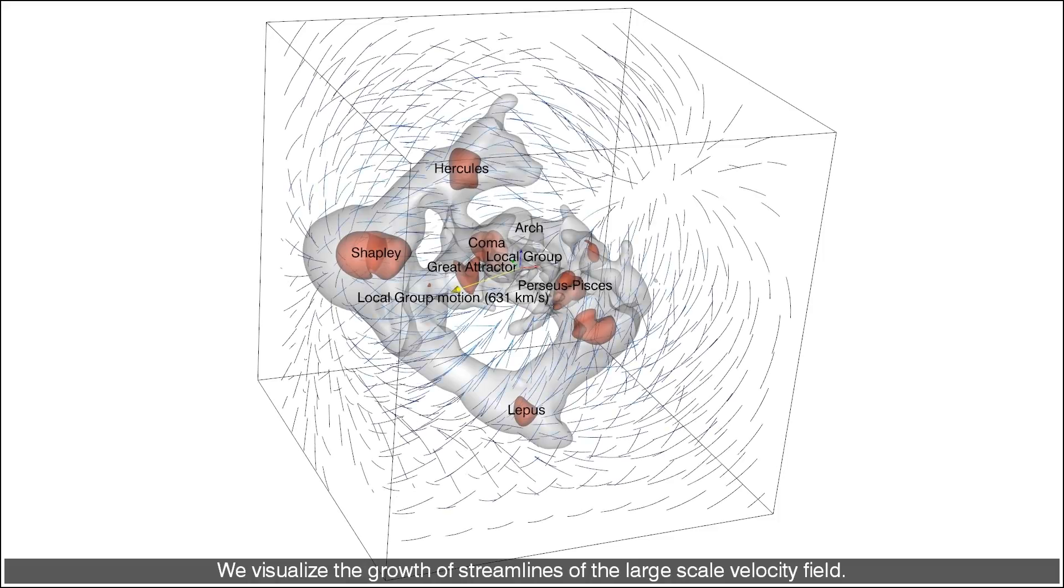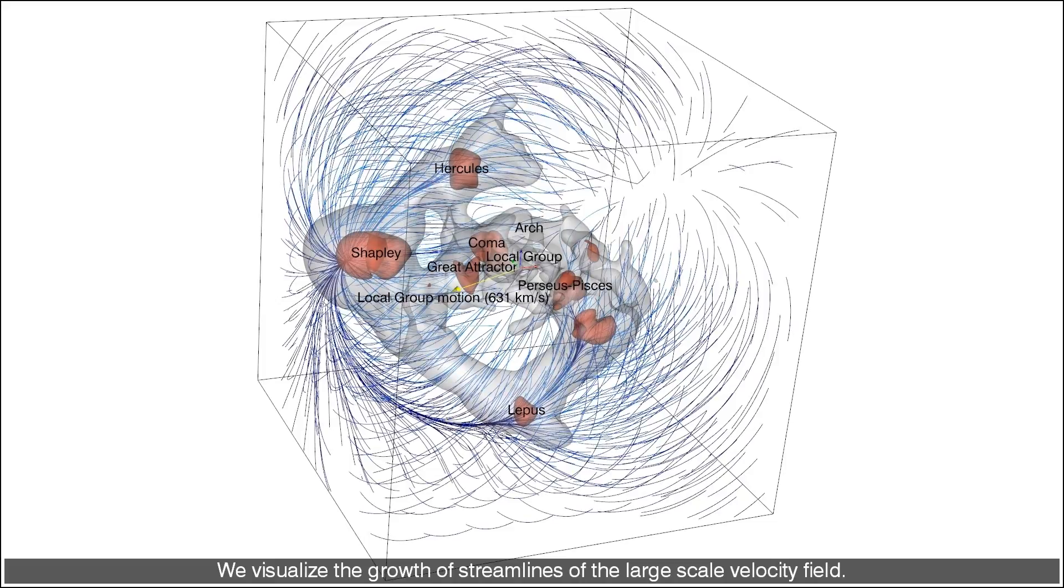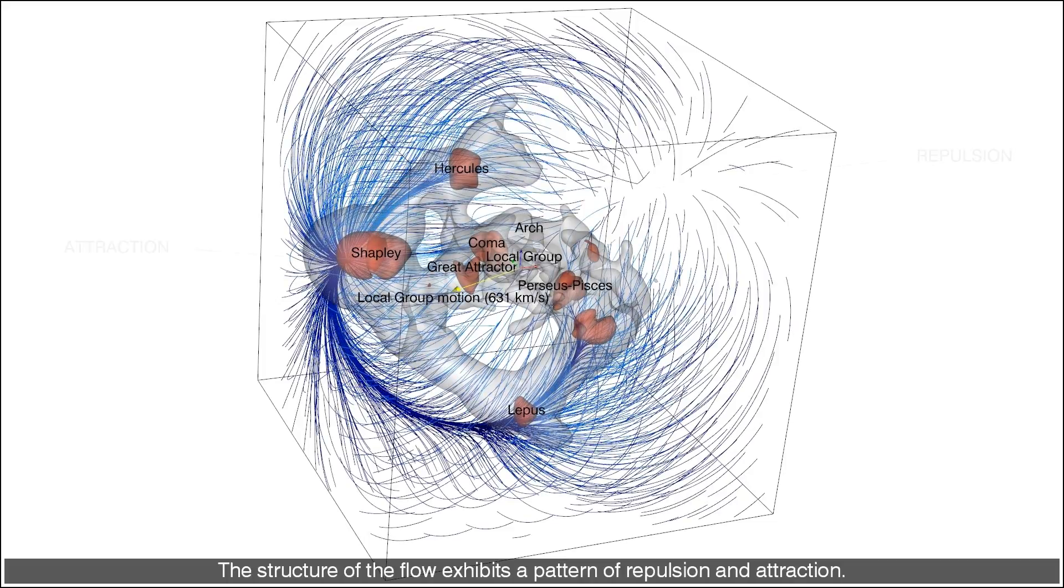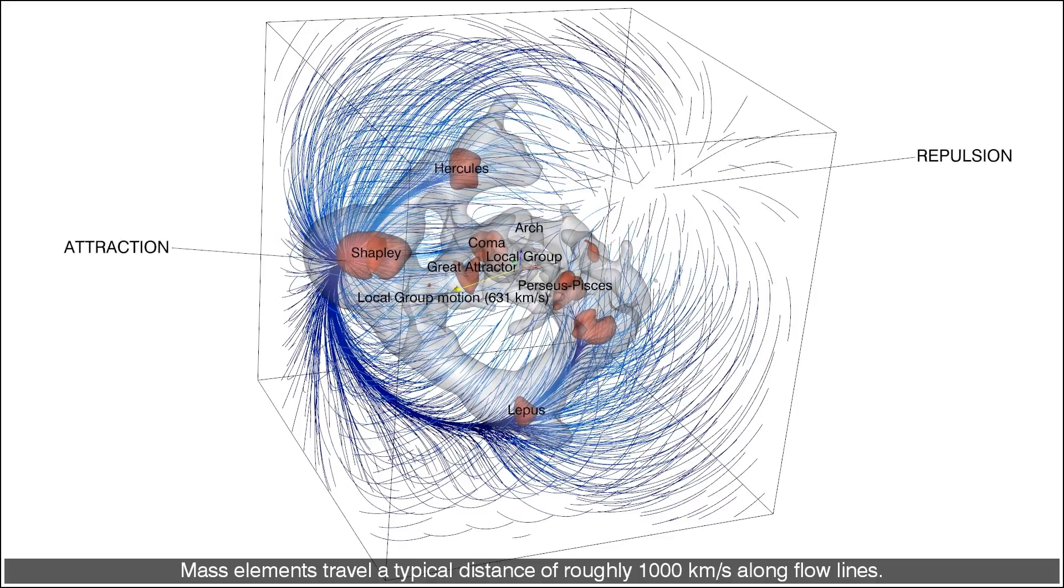We've visualized the growth of streamlines of the large scale velocity field. The structure of the flow exhibits a pattern of repulsion and attraction. Mass elements travel a typical distance of roughly 1000 km per second along flow lines.